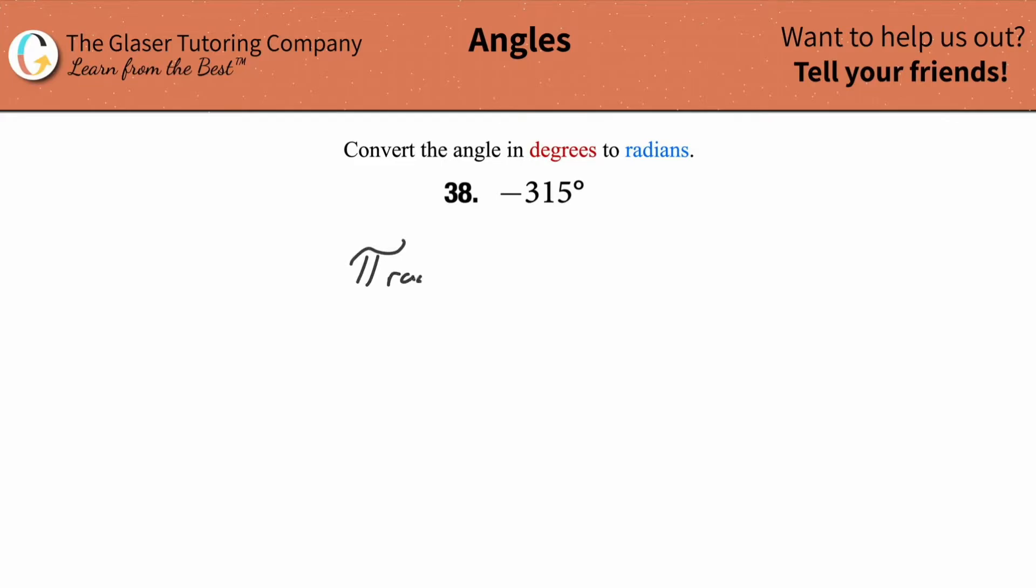We have to know a known relationship between the two, meaning there are pi radians, in other words 3.14 radians, is equivalent to 180 degrees.